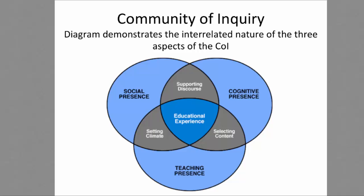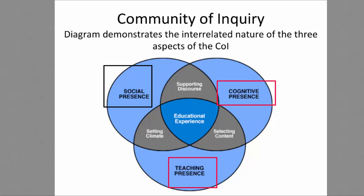Here's a diagram that visually demonstrates the interrelated nature of the three aspects of the Community of Inquiry. They are social presence, cognitive presence, and teaching presence. You can see here, here, and here. We'll talk about each one of these.